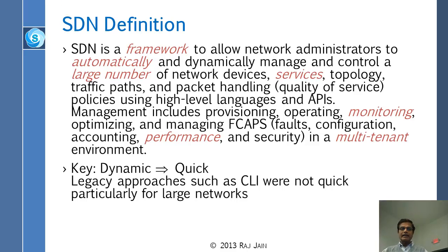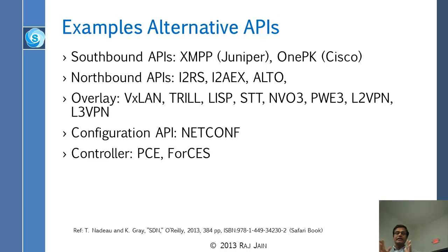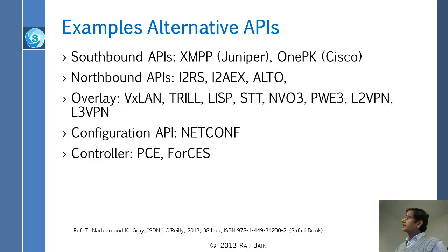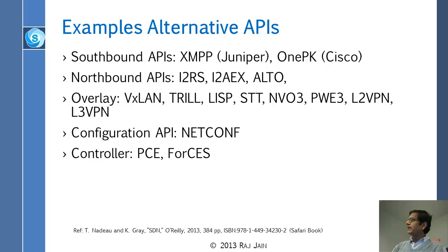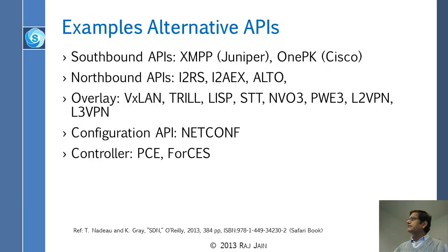Legacy approaches such as CLI, command line interface, are not quick — particularly for large networks. In the last year, a number of APIs have appeared. For southbound we have XMPP and I2PK; for northbound we have I2RS, I2AX, and ALTO; for overlay we have VXLAN; for configuration API, NETCONF; and for controller APIs, PCE and ForCES. All of these are acronyms you may not have heard of, and I'm going to explain the most important ones.